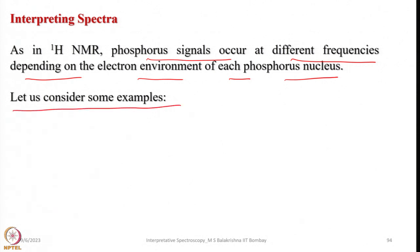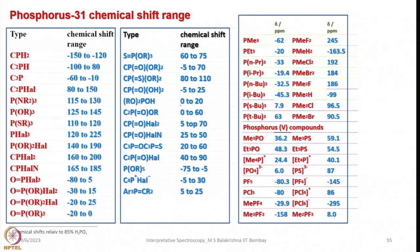Let us consider some examples. You can see an extensive list of chemical shifts and the chemical shift ranges for various types of phosphorus compounds. I will elaborate on this in my next lecture. Until then, have an excellent time reading on spectroscopy. Thank you.